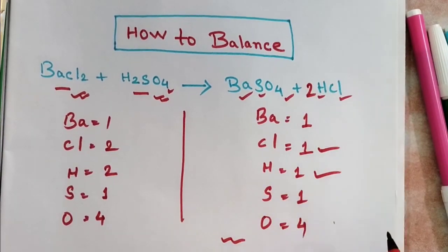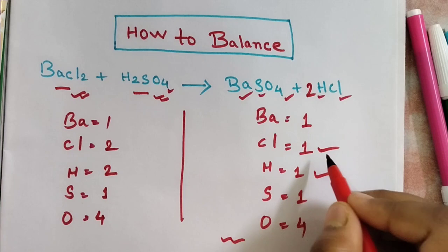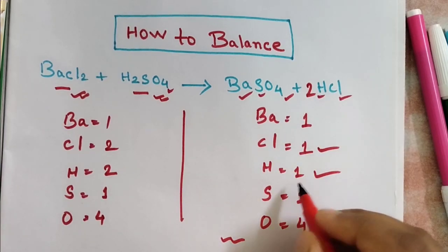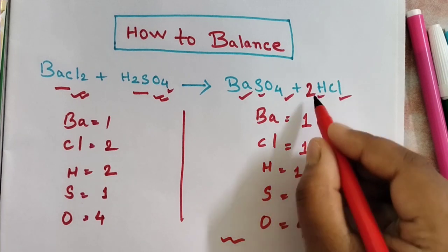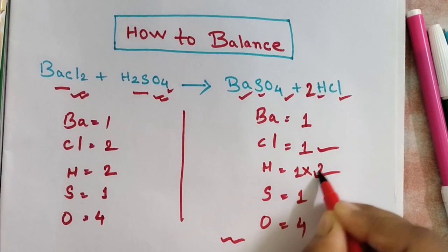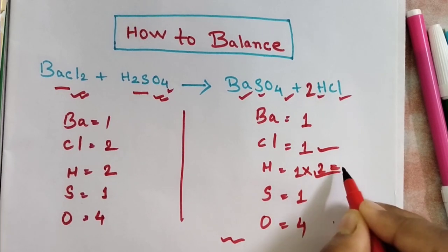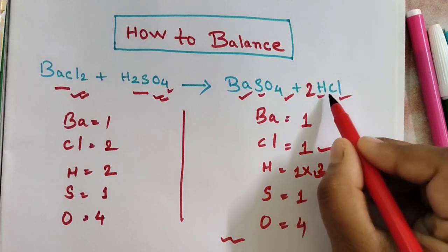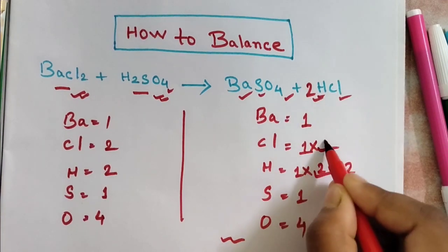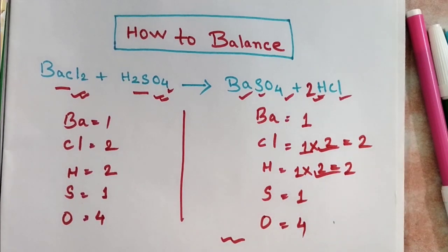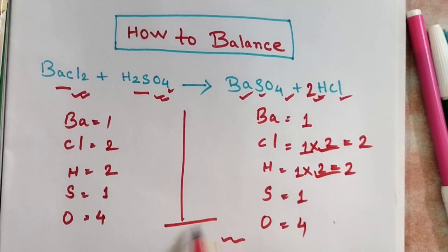If I put 2 in front of HCl, you can see this 1 times 2 gives me 2 hydrogen, and here 1 times 2 gives me 2 chlorine atoms. So now the equation is balanced. Thanks for watching.